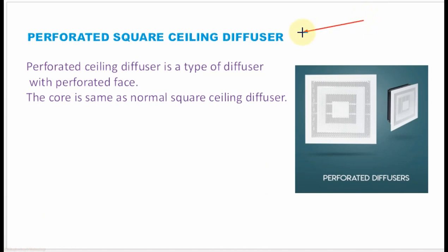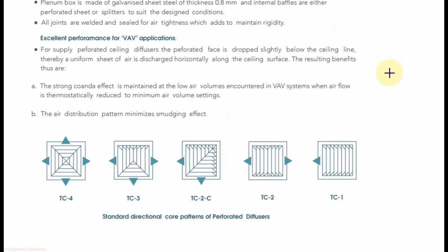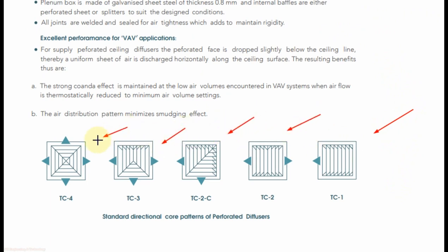The perforated square ceiling diffuser is a type of diffuser with a perforated face. The core is the same as a normal square ceiling diffuser. Like the normal square ceiling diffuser, it also comes in 4 types: 1-way, 2-way, 3-way, and 4-way.